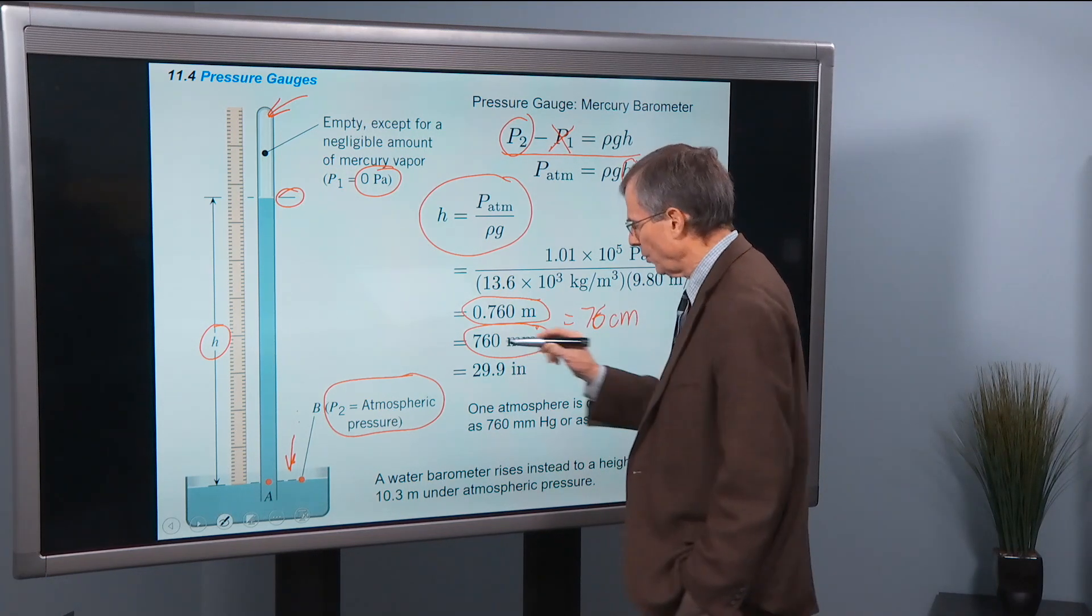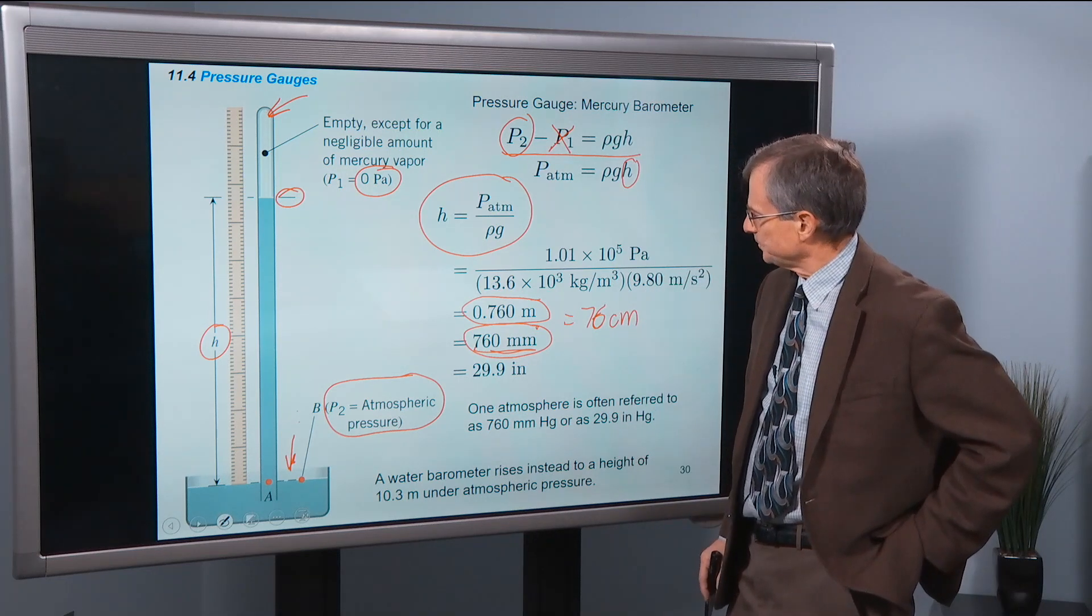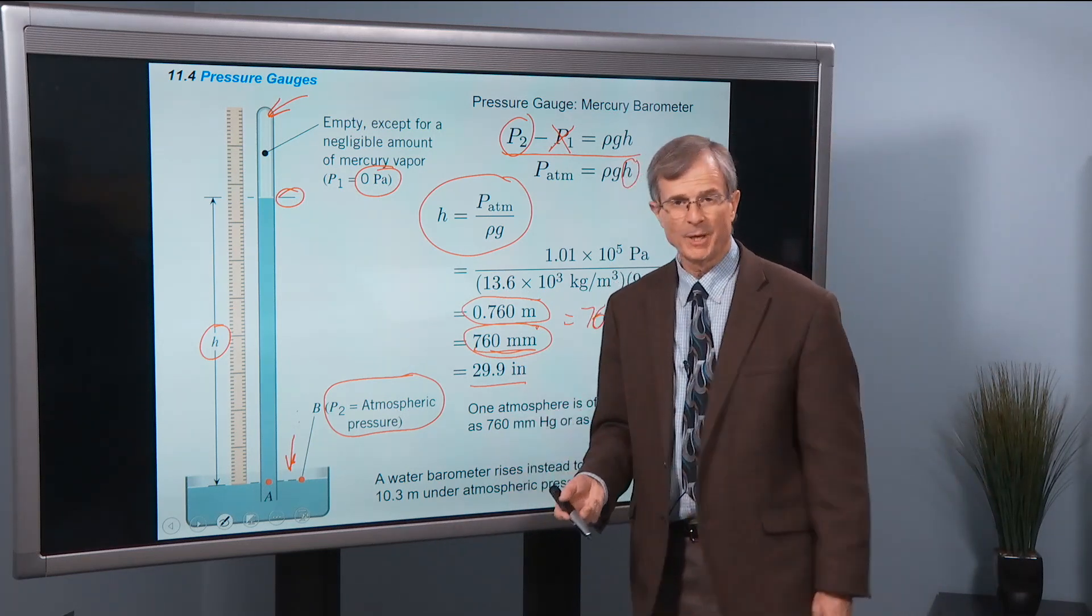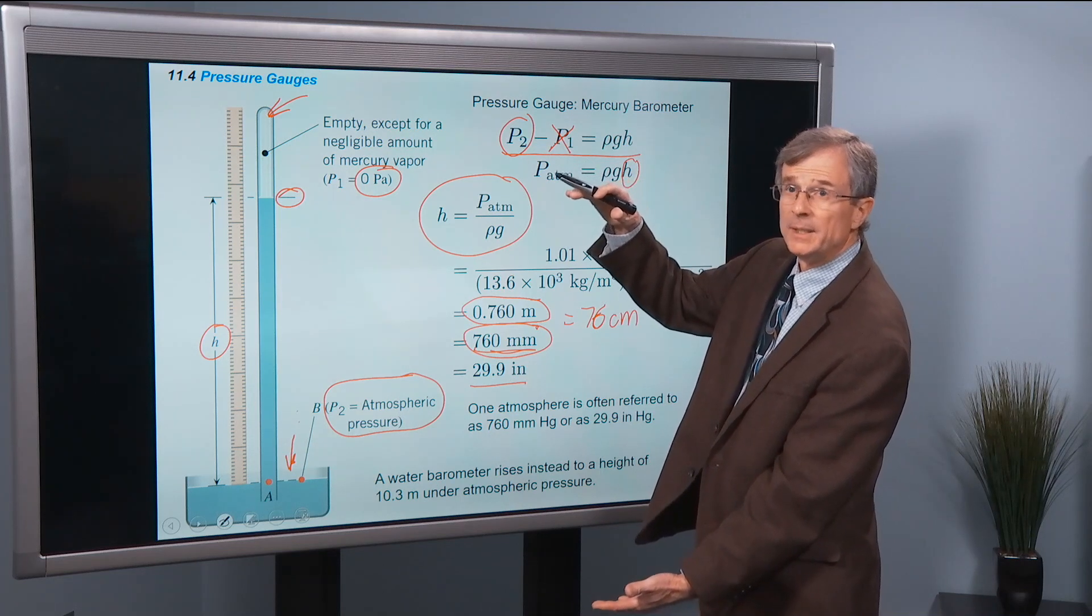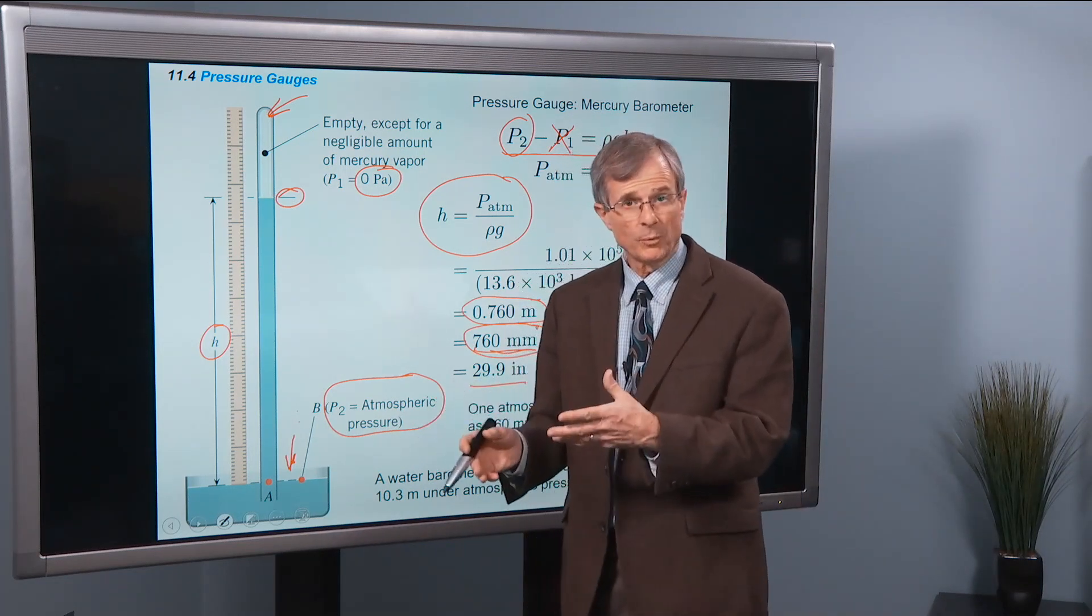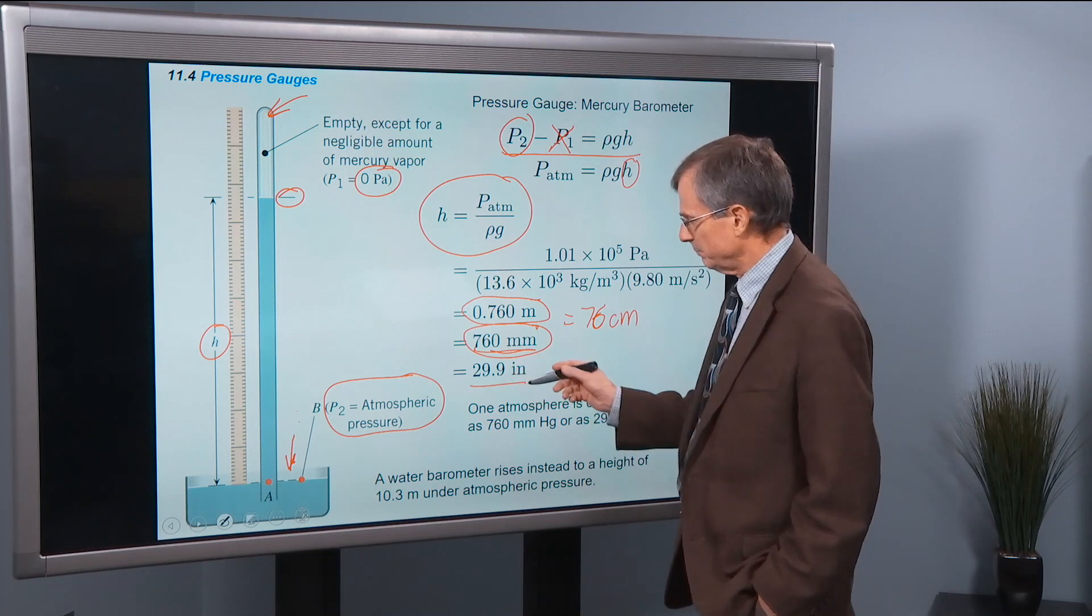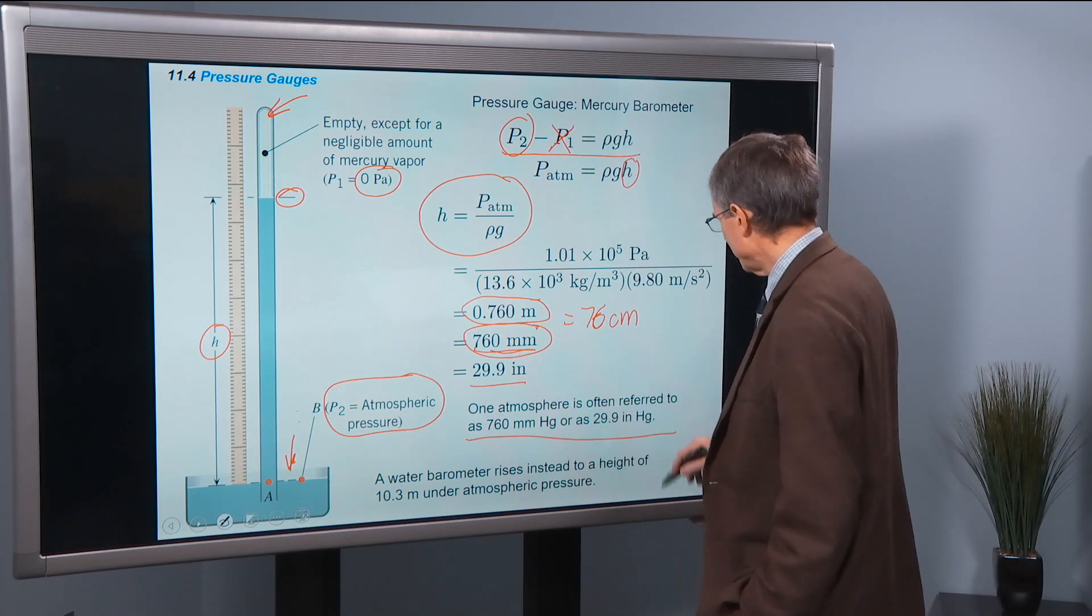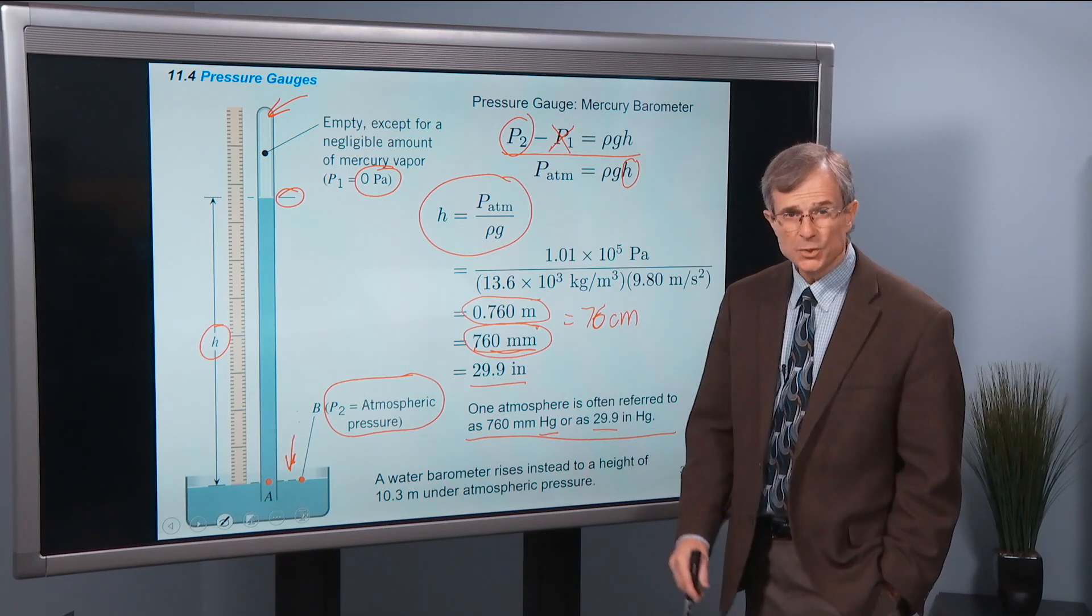Or 760 millimeters. 76 centimeters or 760 millimeters. This is where the origin of the term millimeters of mercury comes. And that's about 29.9 inches. And sometimes the weatherman will talk about inches of mercury. It's about 30 inches of mercury. So something like that is how many inches of mercury you get for atmospheric pressure. Now, when you're in a pressure low, like a storm rolling in or whatever, this atmospheric pressure is less than this value. And you might get 28 or 29 inches of mercury instead of 30 inches of mercury. So one atmosphere is often referred to as 760 millimeters of mercury, or as 29.9 inches of mercury.